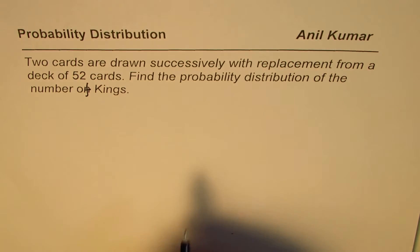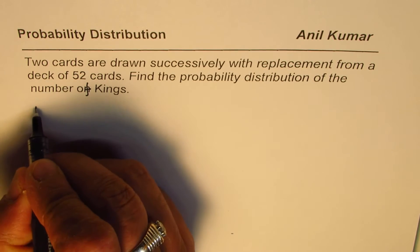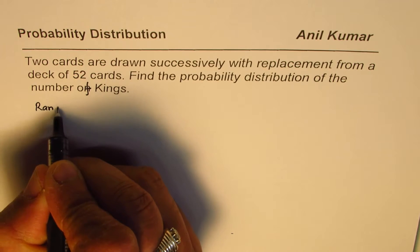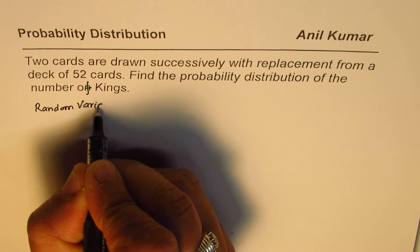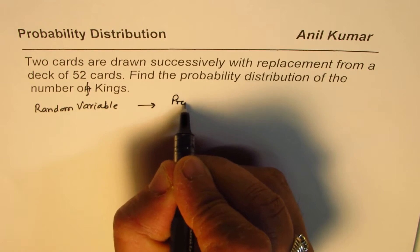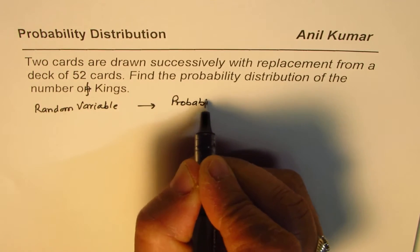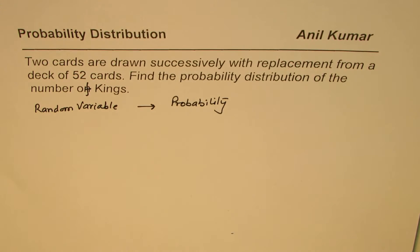In such questions, when we are talking about probability distribution, we need to define a random variable. That is the first thing. And we have to assign probability. So that combination actually is the probability distribution.